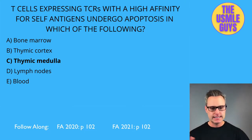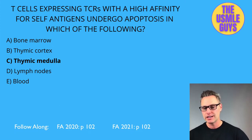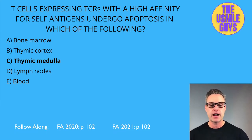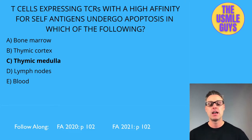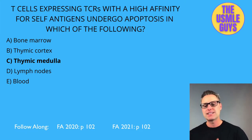Regulatory T-cells maintain specific immune tolerance via the suppression of CD4 and CD8 T-cell effector functions. They are identified by the expression of CD3, CD4, CD25, and FOXP3. When activated, regulatory T-cells produce anti-inflammatory cytokines like IL-10 and TGF-beta. Cytotoxic T-cells kill cells by inducing apoptosis — they kill neoplastic cells, donor graft cells, and virus-infected cells.